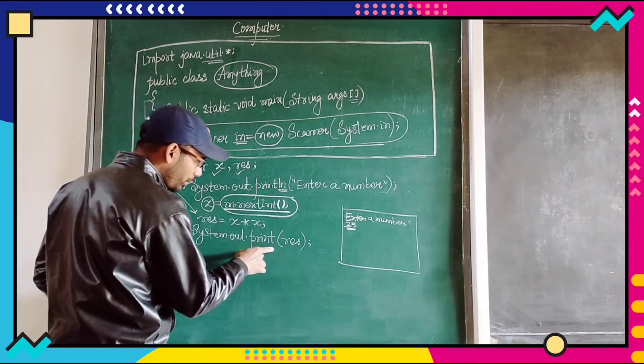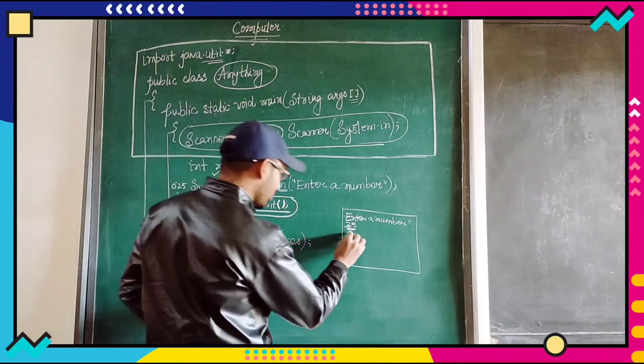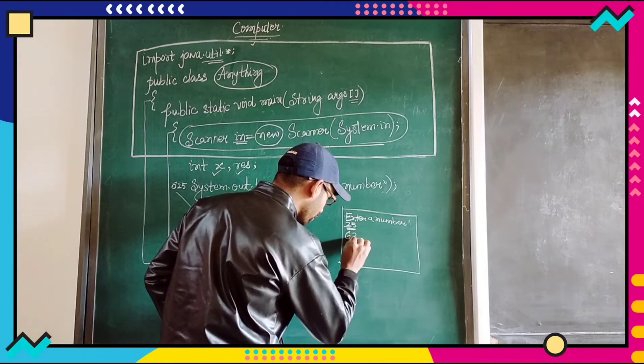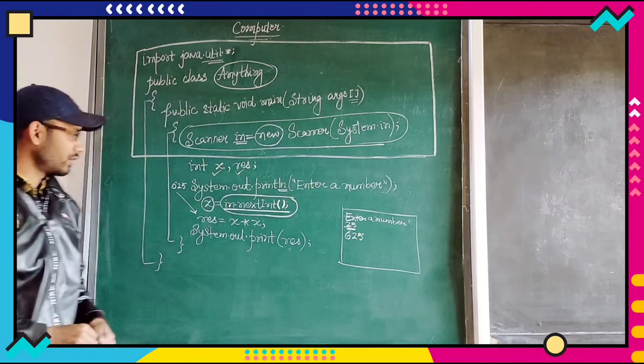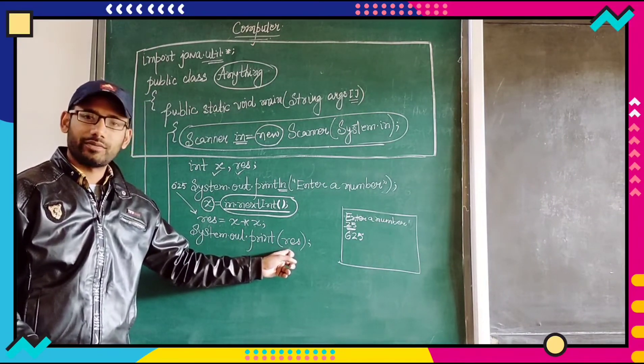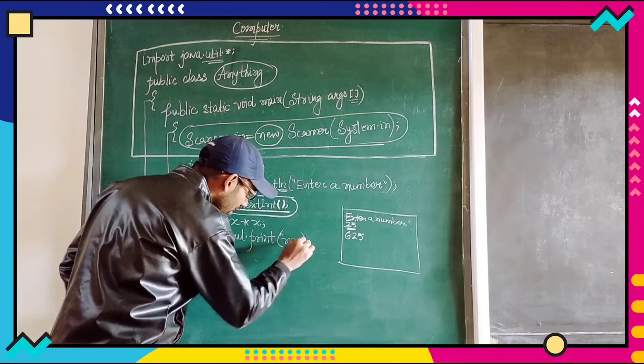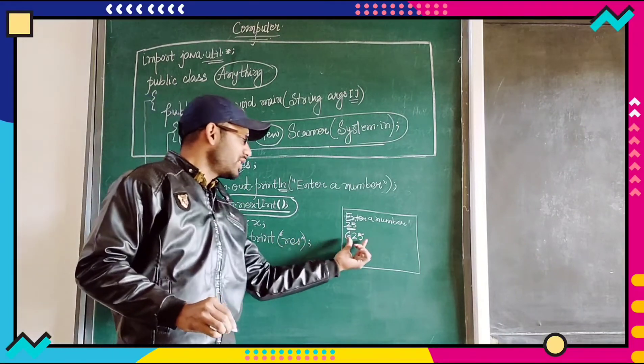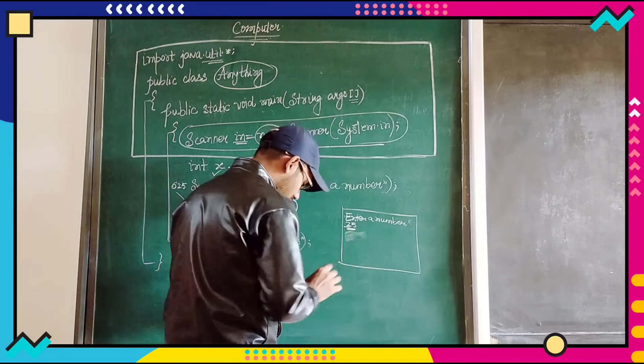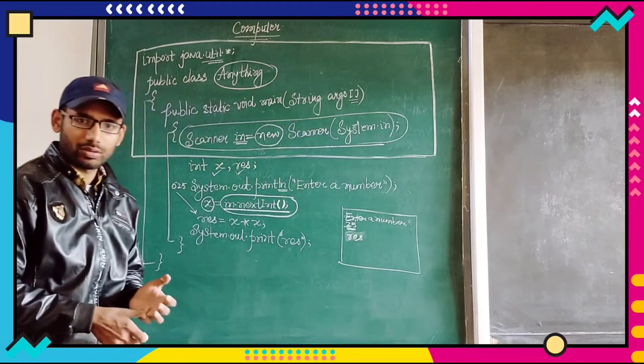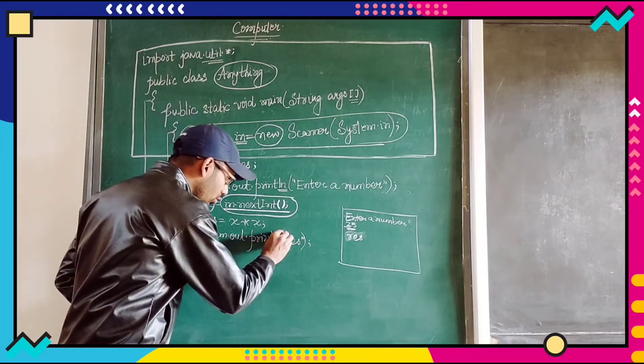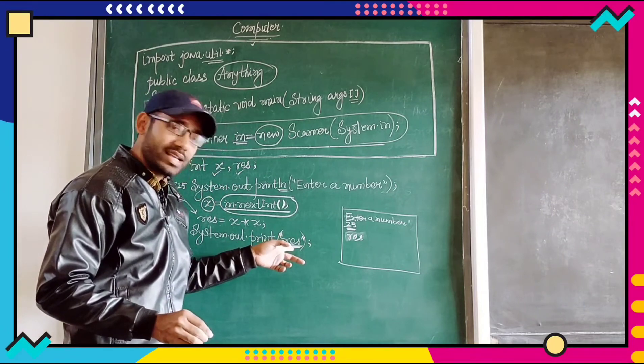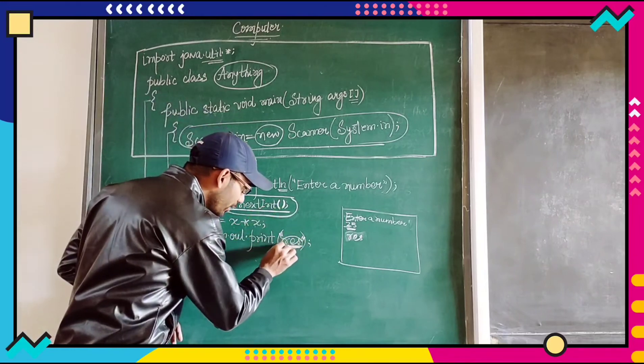After that system dot out dot print res. That means ln was utilized. That means number 625 here, result will be displayed as 625. Do remember, as soon as you will give this symbol, instead of 625 res will be displayed. Since this double quote, whatever the content is present inside this res variable will not be displayed. Instead this very particular thing will be displayed.